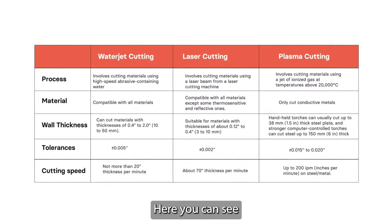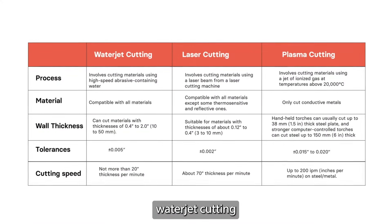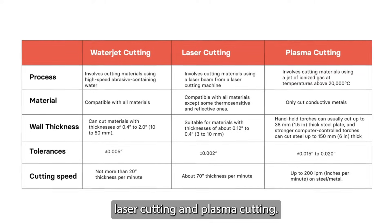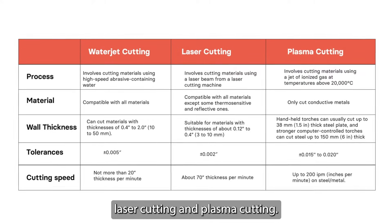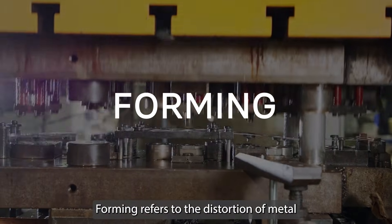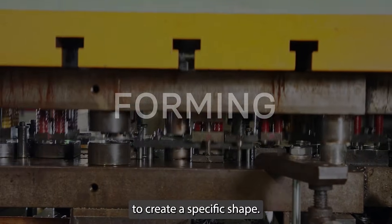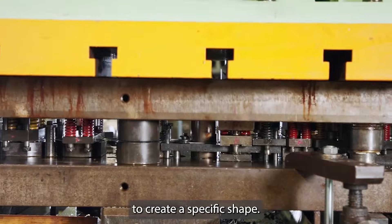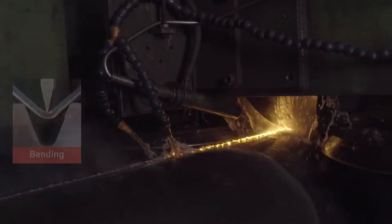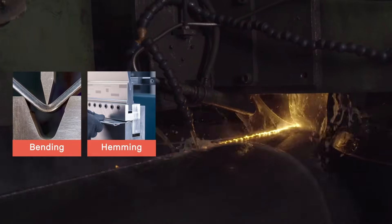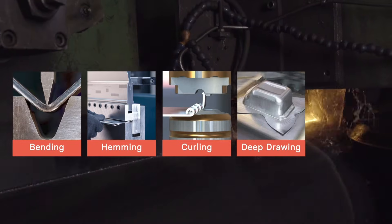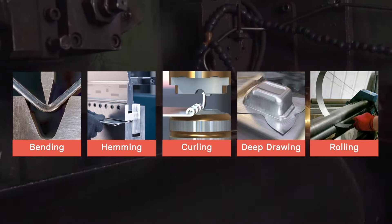Here you can see the comparison between water jet cutting, laser cutting, and plasma cutting. Forming refers to the distortion of metal to create a specific shape. Common forming techniques include bending, hemming, curling, deep drawing, and rolling.